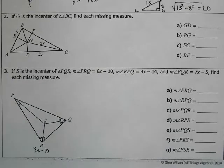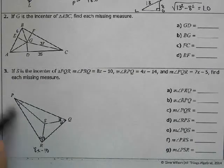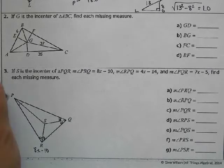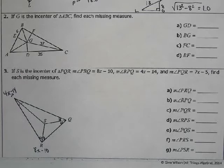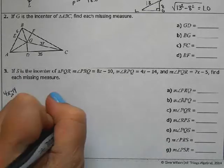RPQ, this whole angle is 4x minus 14. And PQR is 7x minus 5.